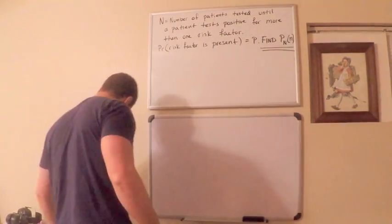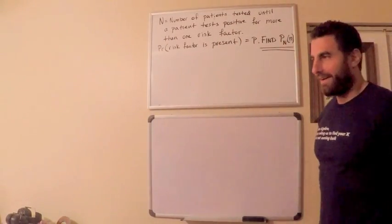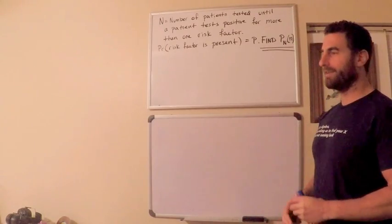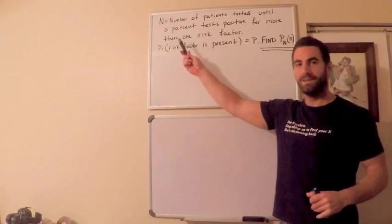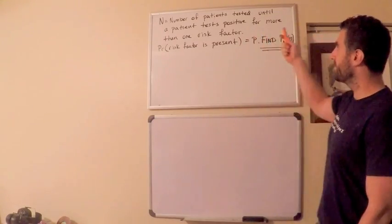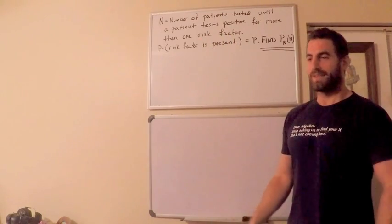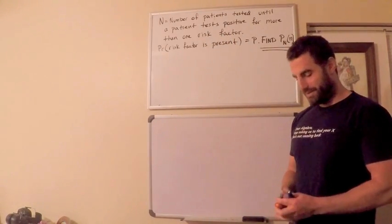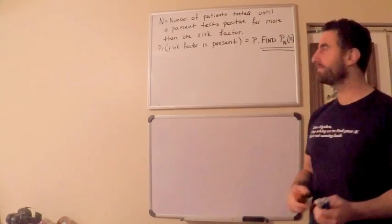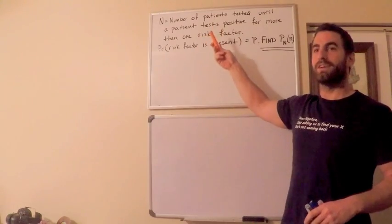Hopefully you had a chance to read the question. For this question, I'm going to define a random variable, calling it N. N is a discrete random variable because it represents the number of patients tested until a patient tests positive for more than one risk factor. If you're familiar with the kinds of discrete distributions that are common, you'll recognize that this is something like a geometric distribution.